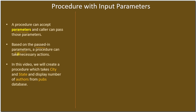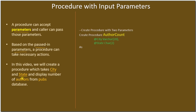The passed parameter will control how the procedure behaves, or based on the passed parameter the procedure output may vary. In this video we will create a procedure which takes city and state and displays the number of authors from the pubs database. The procedure will take two parameters: one is city and another one is state, and based on them it will display the number of authors who belong to the specified city and state.